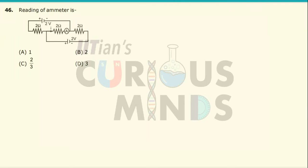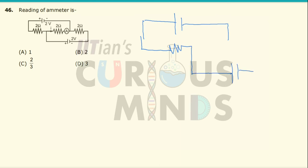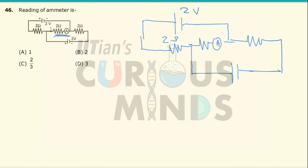We need to find the reading of the ammeter in this circuit. Let me draw a zoomed-in diagram. There is a cell connected to a 2-ohm resistance, then another cell connected to another 2-ohm resistance, and a 2-ohm resistance with an ammeter. This is a 2-volt cell, the resistors are 2 ohms each, and the bottom cell is also 2 volts.